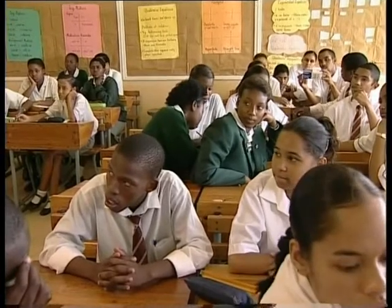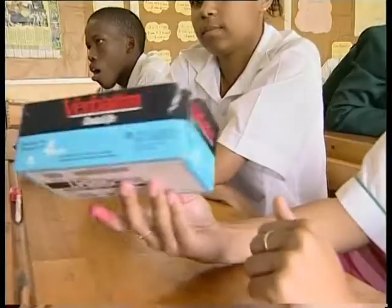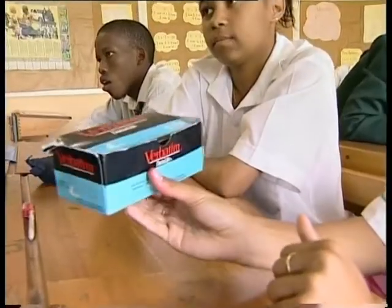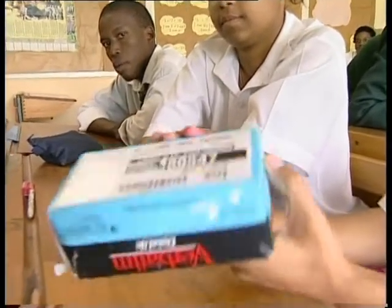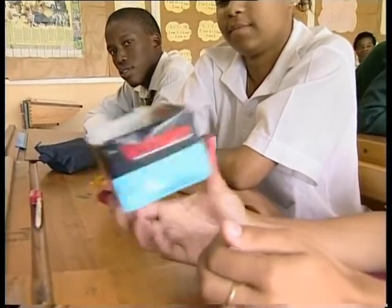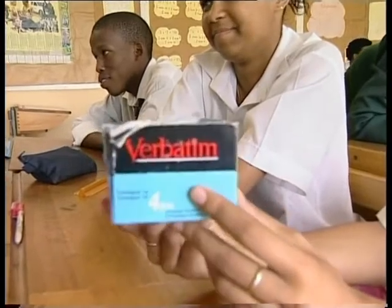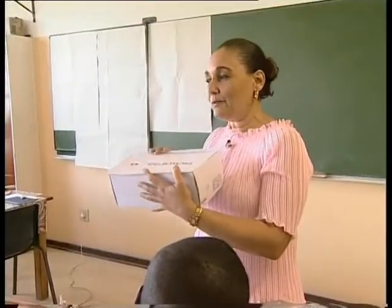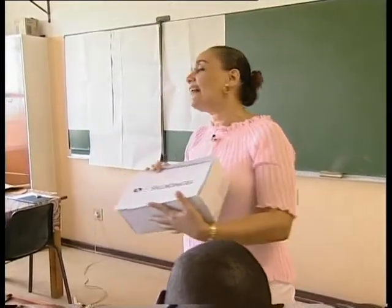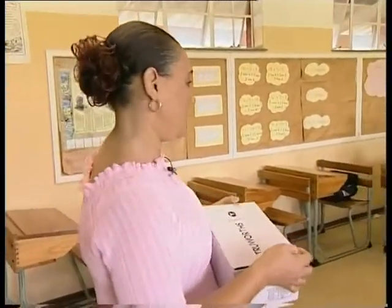An understanding of the properties of geometric shapes is key to solving 3D problems. Given that the learners had very little experience working with representing 3D shapes, Ms. Frankson decided to start with a rectangular prism or box. She asks: "What do you notice about the surfaces of your box?"